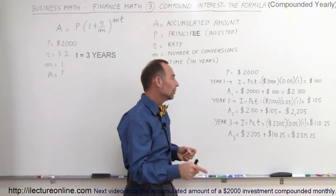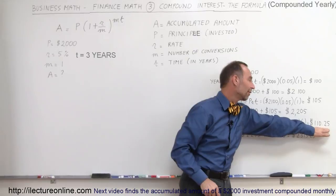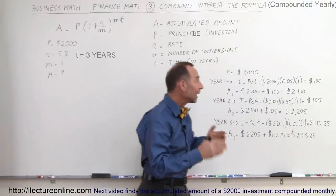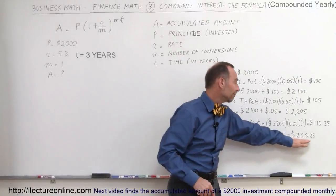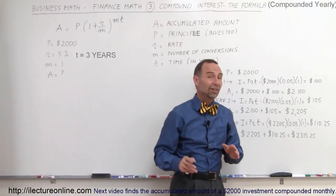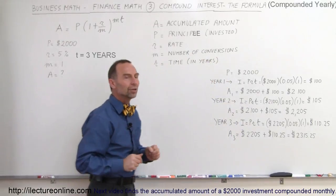In the third year, you earn interest on that amount, so you earn $110.25. Add that together, and you end up with a total accumulated amount of $2,315.25, which is $15.25 more than if it wasn't compounded yearly.